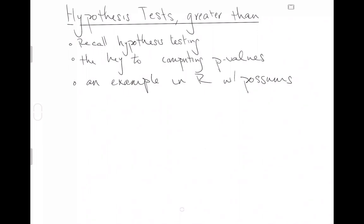And simultaneously we'll realize that the null hypothesis is almost always equals to. In this video we'll do some quick recollection of hypothesis testing in general. Then I'll show you a really helpful plot that I think will be the key to computing p-values. This key is going to depend on the alternative hypothesis. And then we'll do an example in R about possums, and hopefully this video is going to be much shorter than the last.